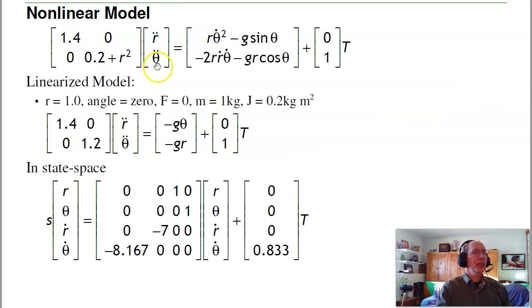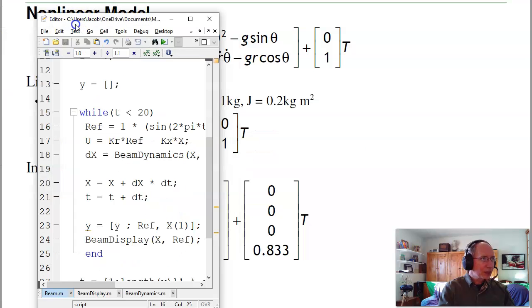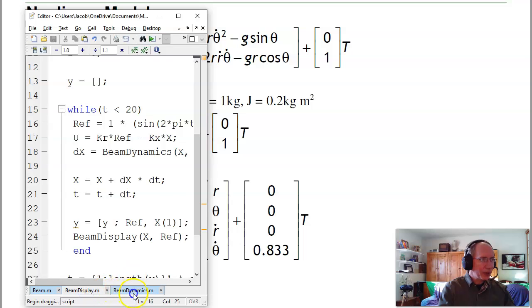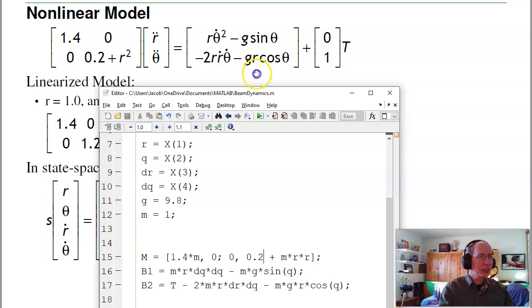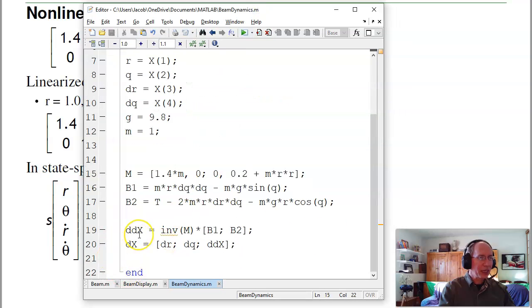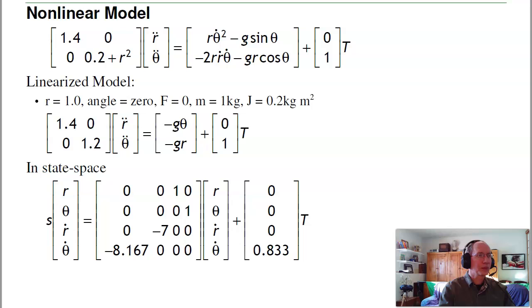Here's the nonlinear model that goes into MATLAB. If I go into my simulations, I have one called beam dynamics. Here's the mass matrix. B1 is this term, B2 is the second row. The acceleration is the inverse of the mass matrix times the first row and second row. That's the nonlinear model.